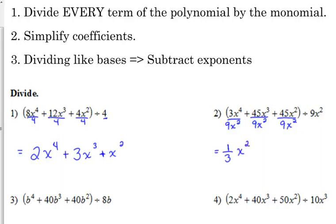3 over 9 reduces to 1 third. x to the fourth over x squared, when you're dividing, you subtract exponents. So 4 minus 2 is 2, so that simplifies to 1 third x squared.